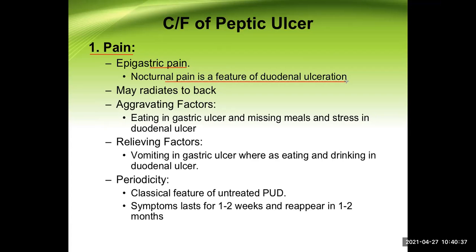For example, if the patient has eaten before bedtime, a few hours later there's no pain — but towards the early morning when the stomach is empty, nocturnal pain develops in duodenal ulceration. Pain may also radiate to the back if the ulcer goes deeper and erodes toward the posterior side.